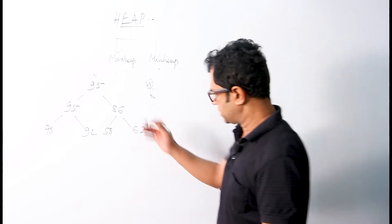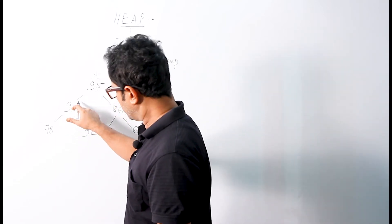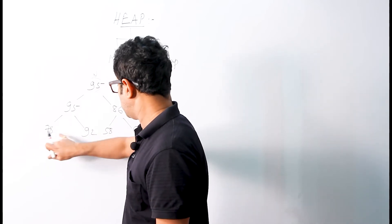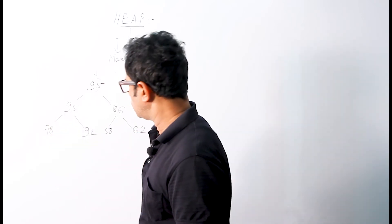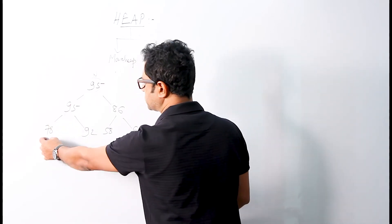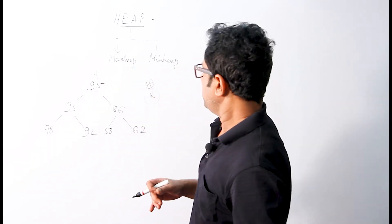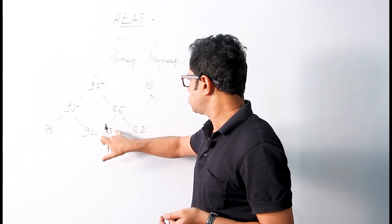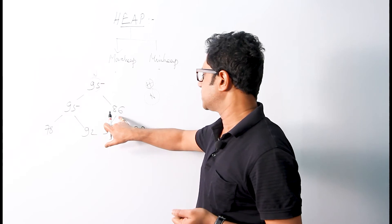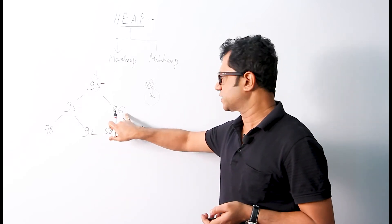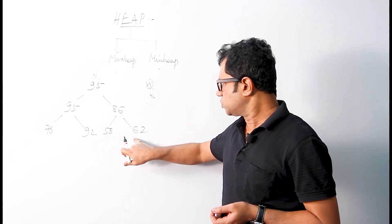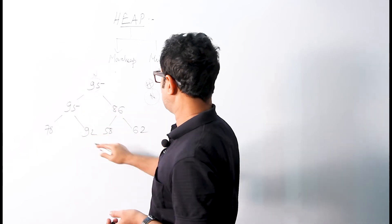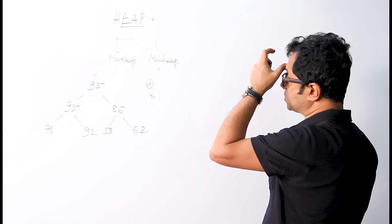Let us check other nodes as well. The node with value 95 (second one) has two children 78 and 92, both less than 95 — holds good. The nodes 78 and 92 have no children, so they also satisfy the definition. Node 86 has two children 58 and 62, both less than 86 — also satisfies the Max Heap definition.